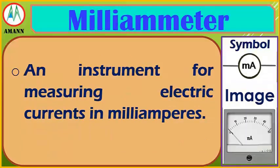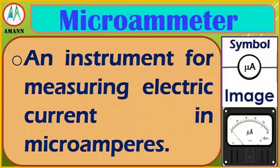Milliammeter is an instrument for measuring electric current in milliamperes. Microammeter is an instrument for measuring electric current in microamperes.